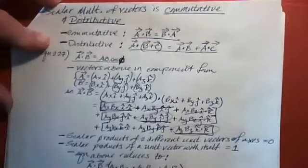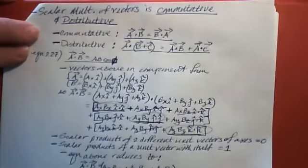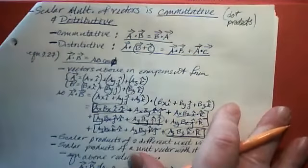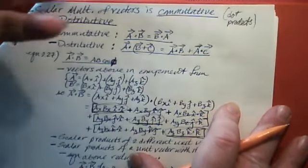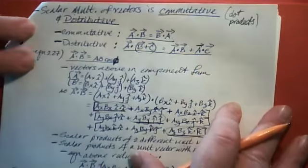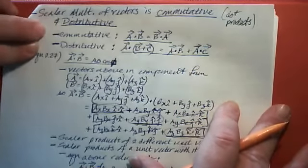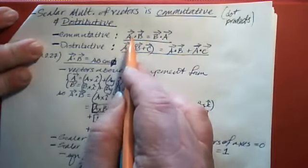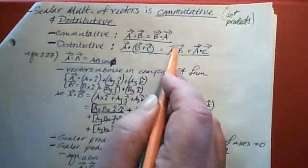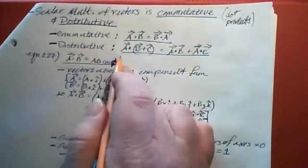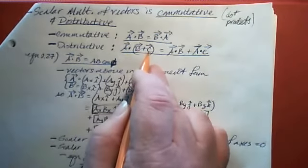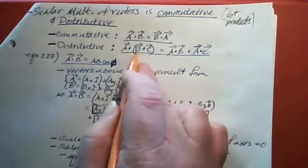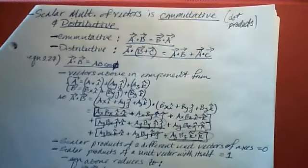Some rules for dealing with dot products: dot products are both commutative and distributive. Commutative means you can do it in either order and get the same result, so vector A · vector B equals vector B · vector A. Distributive means A · (B + C) can be written as A·B + A·C — you distribute A over the things being added in the parentheses.